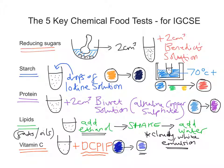So there we have our five key chemical food tests for IGCSE. We use Benedict's solution to test for reducing sugars, iodine solution to test for starch, Biuret solution to test for protein, and the emulsion test — adding ethanol, shaking, then adding water — to test for lipids or fats and oils. Finally, the decolorization of DCPIP is used to test for the presence of vitamin C.